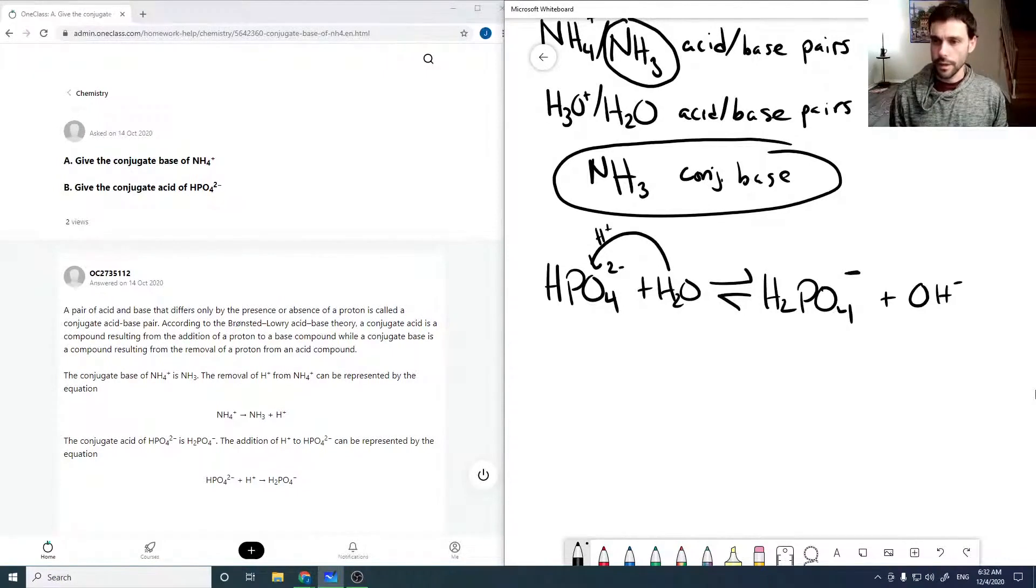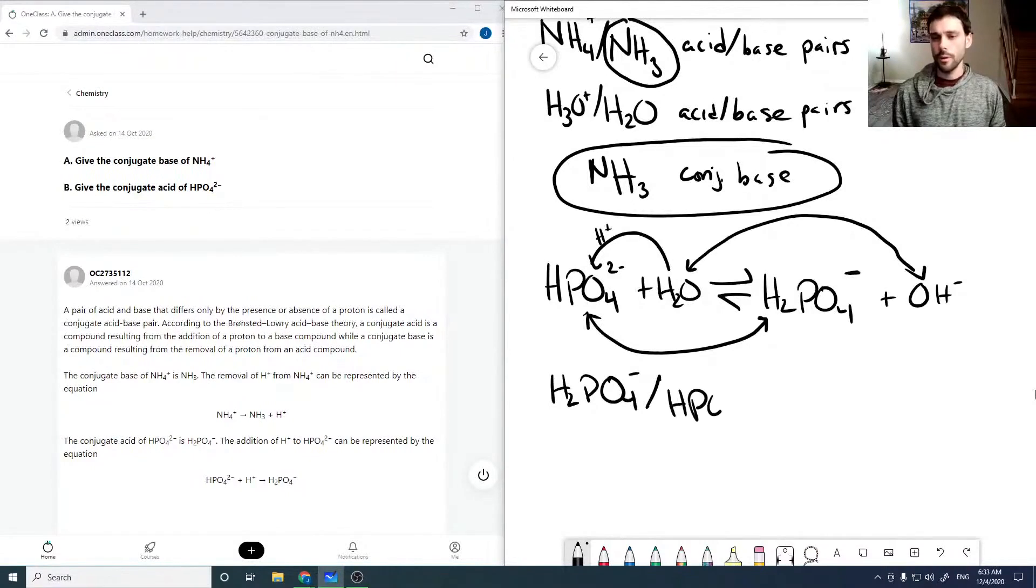And so again, these will be acid-base pairs, and these will be acid-base pairs. So now we've got H2PO4- and HPO4 2- as acid-base pairs, and H2O plus OH- are acid-base pairs.